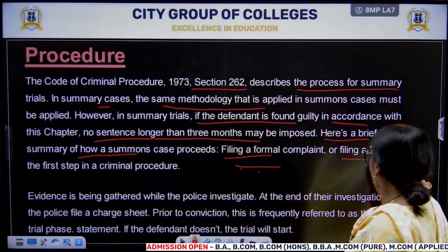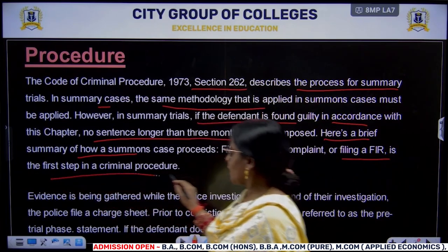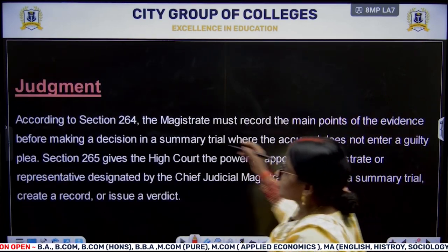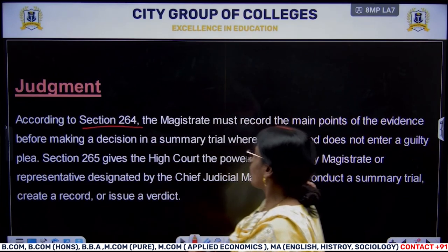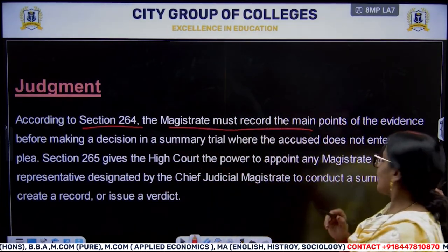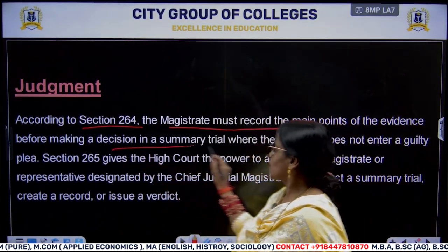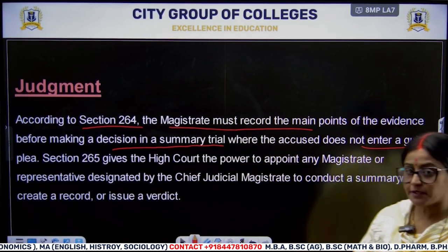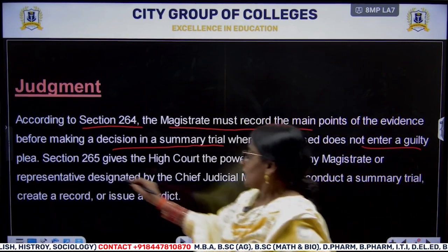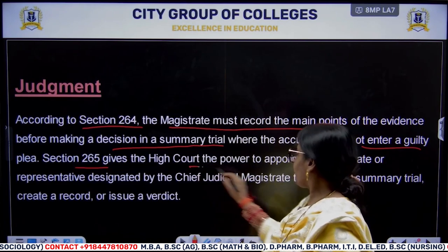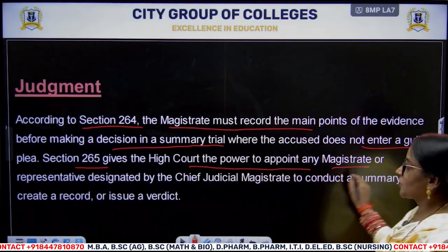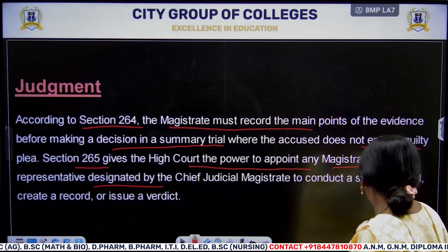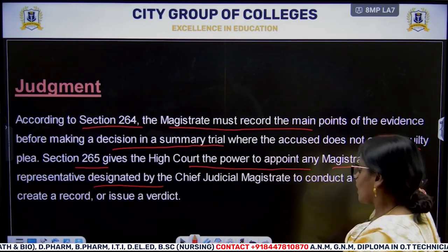Here is a brief summary of how a summoned case proceeds. Filing a formal complaint — filing an FIR is the first step in criminal procedure. Now, regarding judgment, it is mentioned under Section 264: the magistrate must record the main points of the evidence before making a decision in a summary trial. If the accused does not enter a plea of guilt, Section 265 gives the High Court the power to appoint any magistrate or representative designated by the Chief Judicial Magistrate to conduct a summary trial or create a record and issue a verdict.